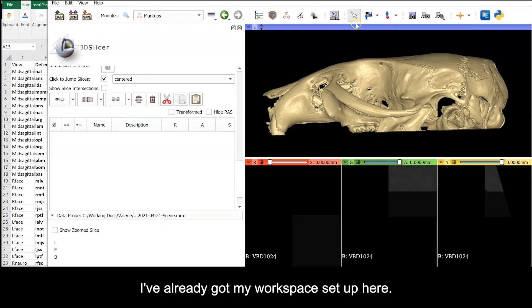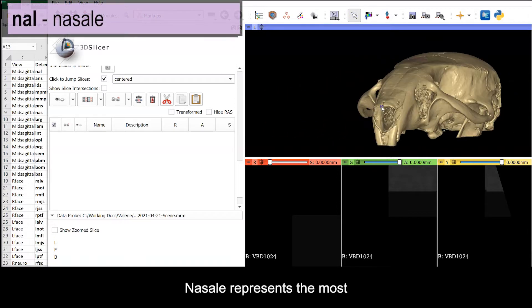I've already got my workspace set up here, see the links below for tutorials to get started with that. Nasale represents the most anterior rostral point on the dorsal nose.